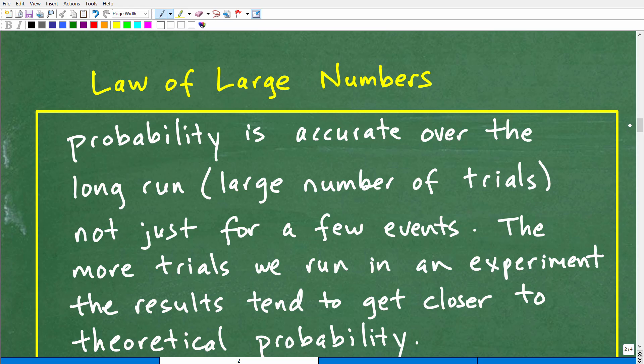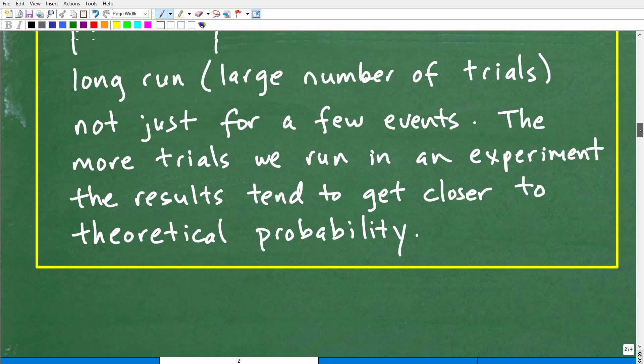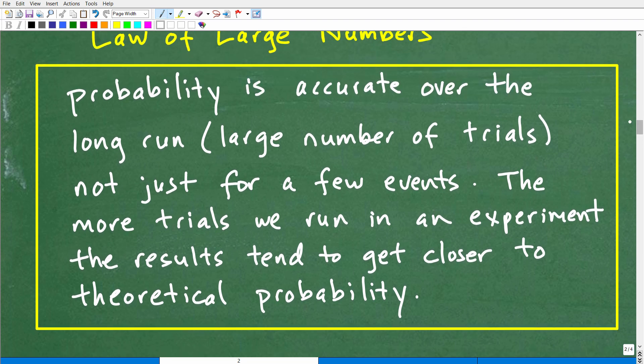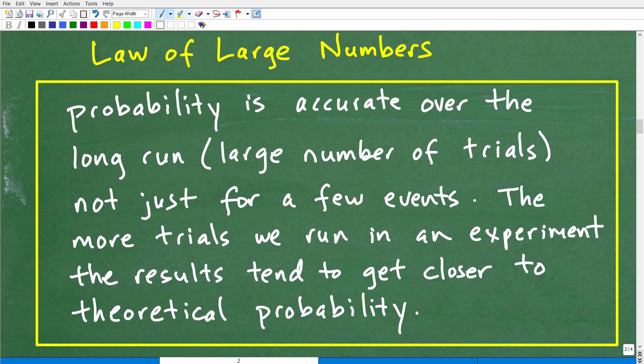And this is called the law of large numbers. If you've never heard of this, this is very, very important, extremely important. And I'm going to go ahead and read this to you. And then, basically, this is going to kind of wrap up this video. Let's go ahead and read this here. So it says the probability - and by the way, there's a lot of different ways you can express the law of large numbers. If you're in a more advanced probability class, it's a little more technical way you can express this. But I'm going to use this language here. Probability is accurate over the long run, okay? The larger number of trials, not just for a few events, okay?